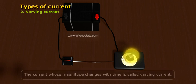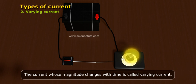Varying current: The current whose magnitude changes with time is called varying current.